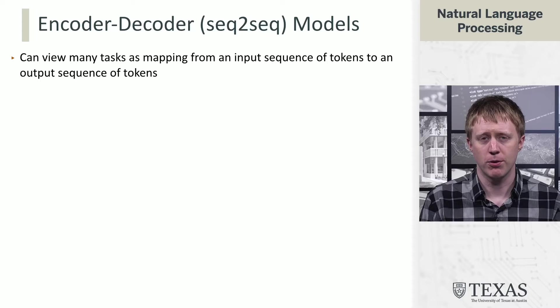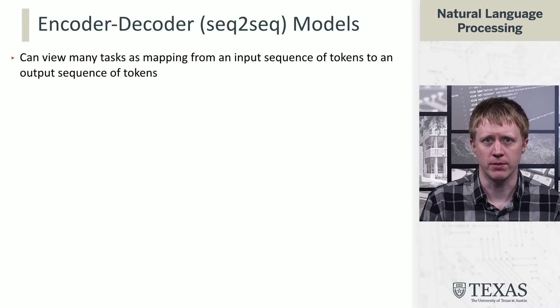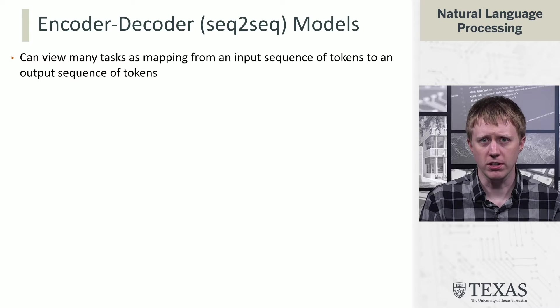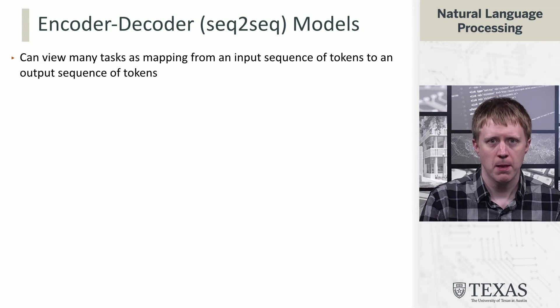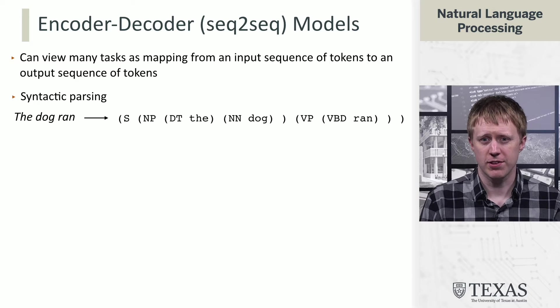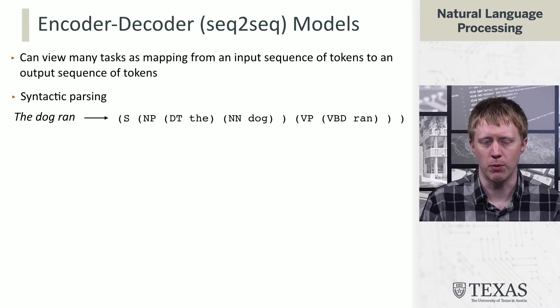In this segment we're going to talk about sequence-to-sequence models, also called encoder-decoder models. We've talked about both language modeling and classification, but there's an important class of tasks which look like mapping from an input sequence of tokens to an output sequence of tokens. A lot of surprising things can be cast into this view.